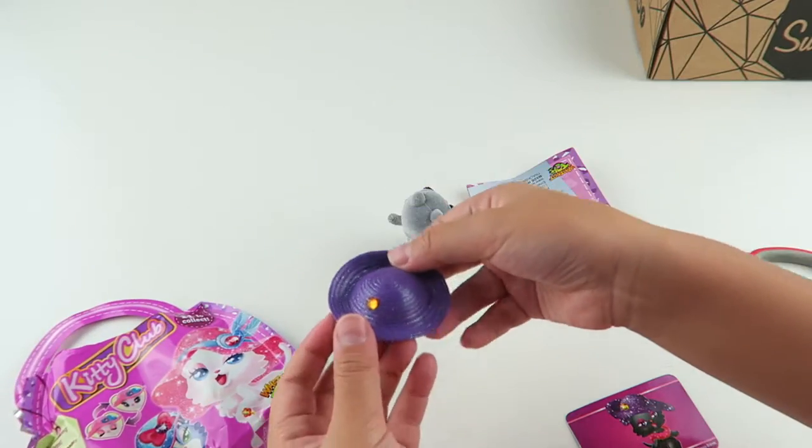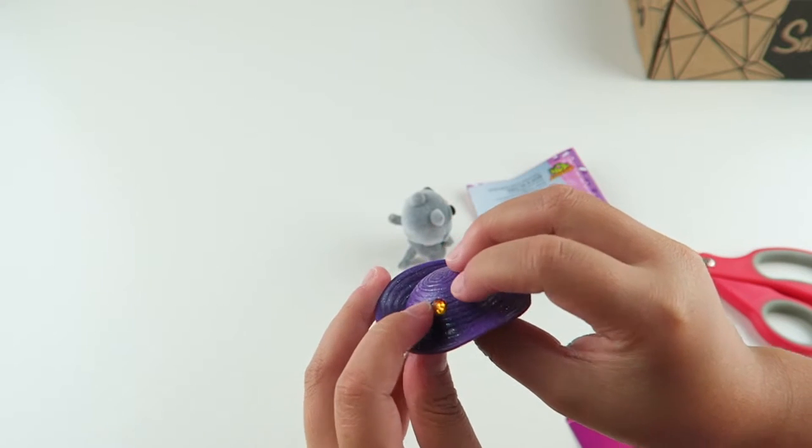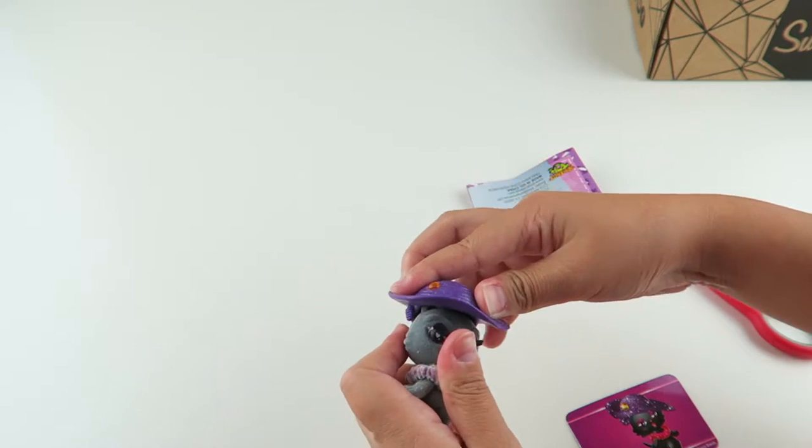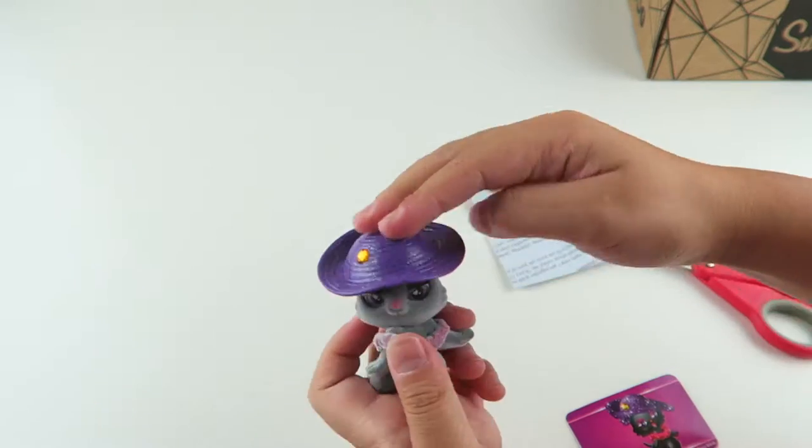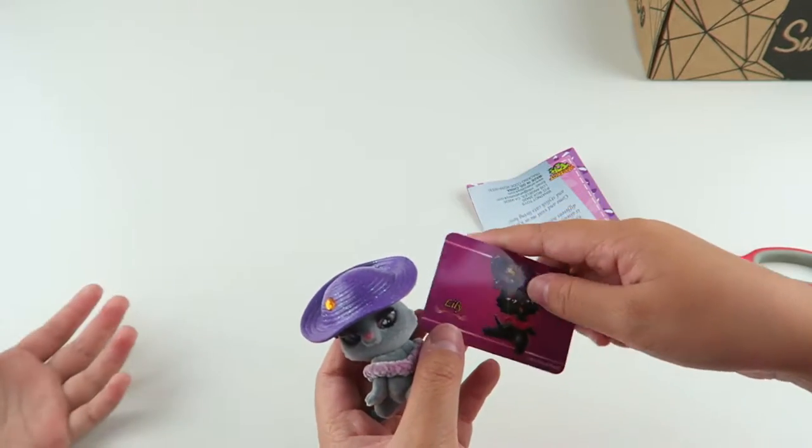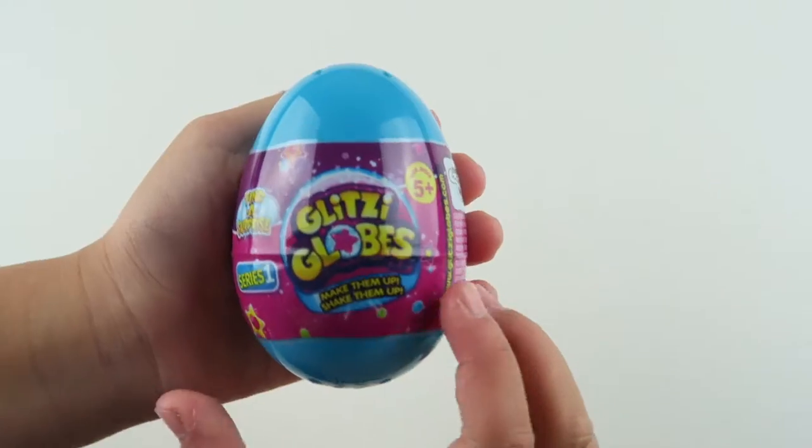So here is her hat. It's a purple hat with like a bow right here and a yellow jewel. Let's put it on. So cute. And I like how they're furry. Yeah, that's really really cool.